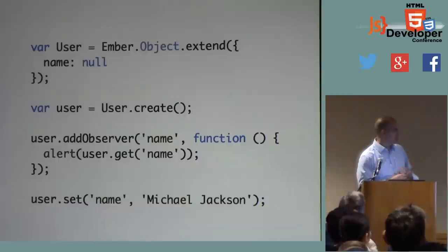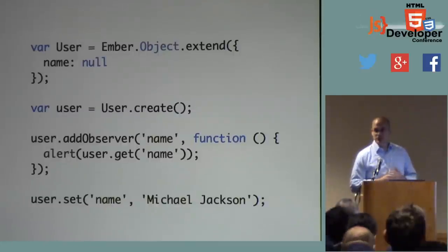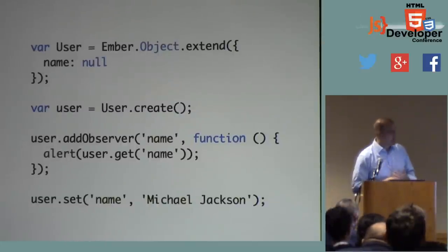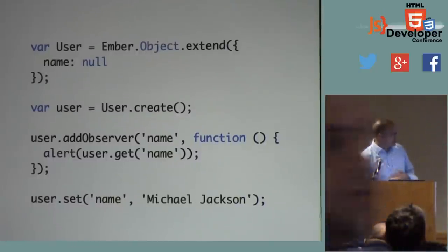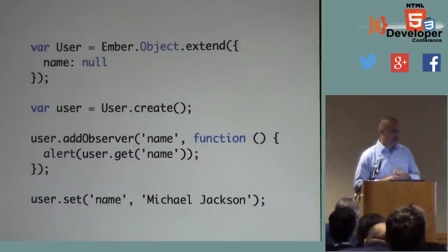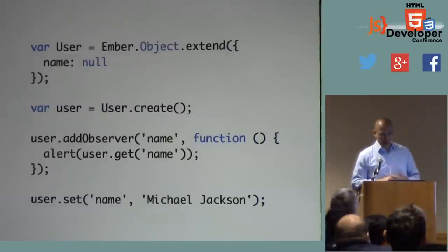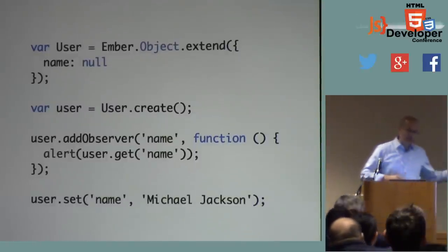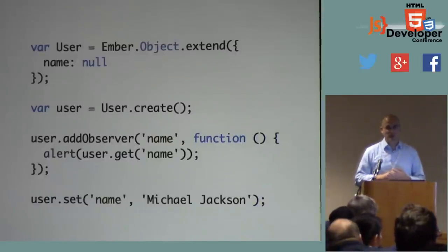Check out this example. I've got a user class that extends Ember object, so all instances are also instances of Ember object. This class has one property, name, which defaults to null. I create a new user and add an observer for the name property — a function that runs any time the name property changes. Then I set the name to Michael Jackson and that observer callback gets called.